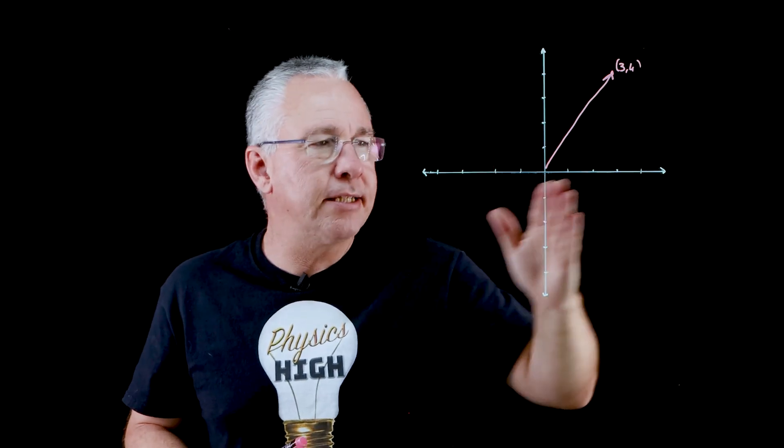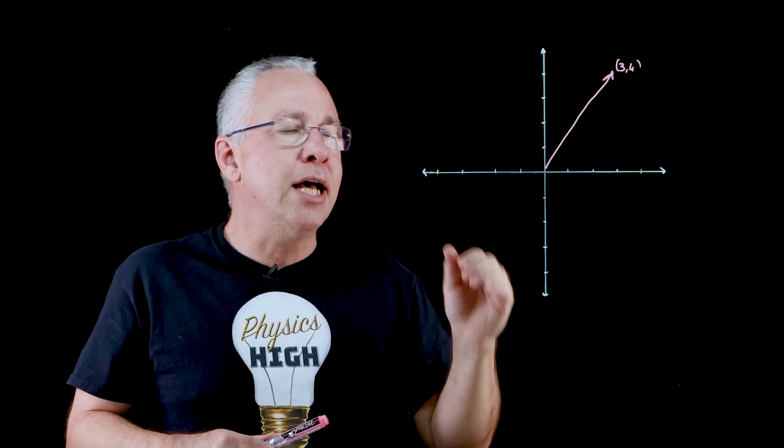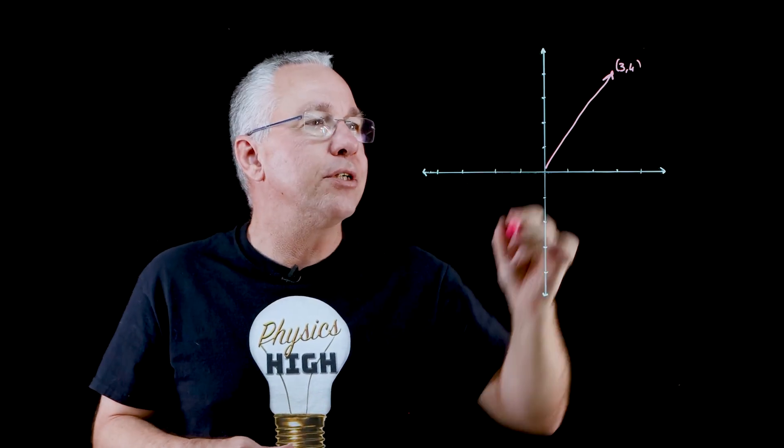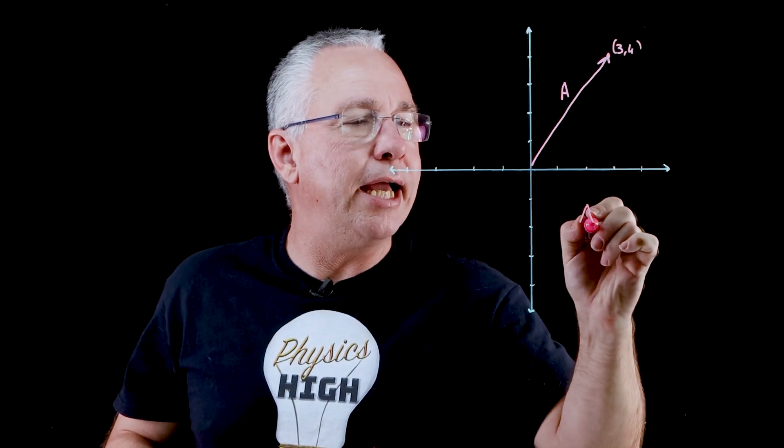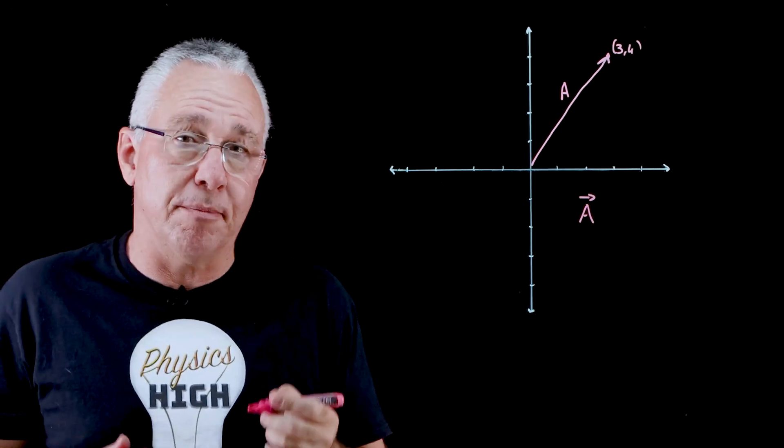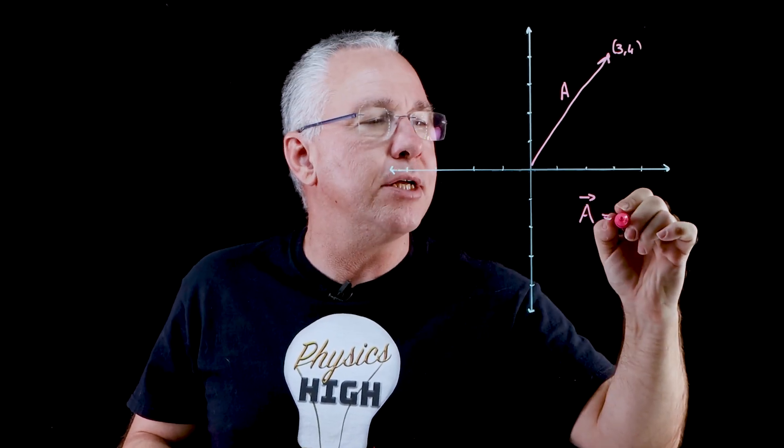What we say is that this vector is three unit vectors in this direction and four units in that direction. So if this is my vector a, we put a little arrow on the top to make sure we are talking about the vector is equal to the x component.